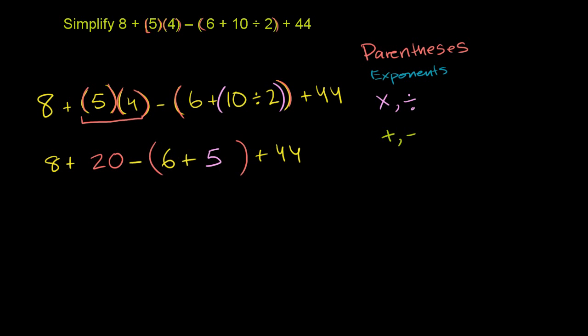Well, we still have to evaluate this parentheses. So this results with 6 plus 5. Well, that's 11. So we're left with 20. Let me write it all down again. We're left with 8 plus 20 minus 6 plus 5, which is 11, plus 44.